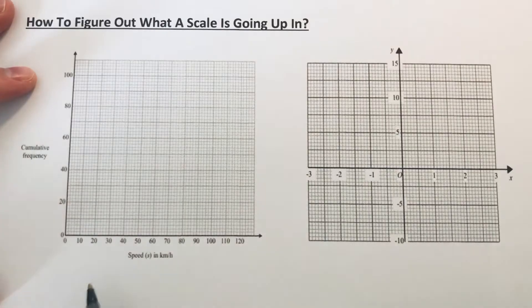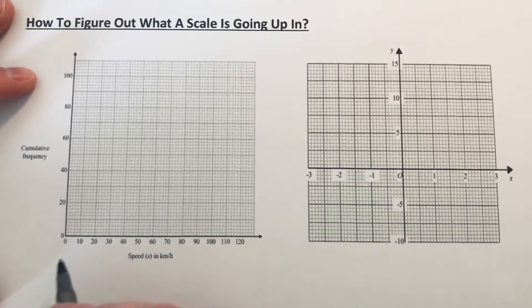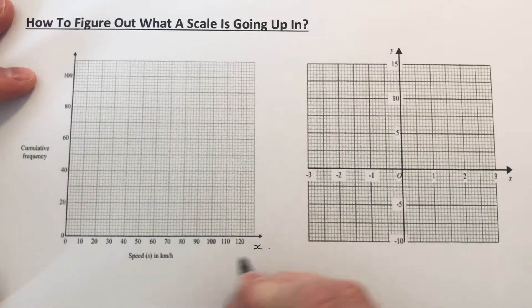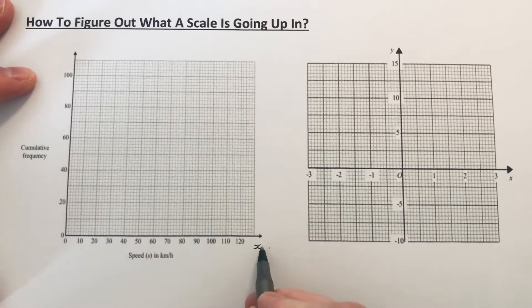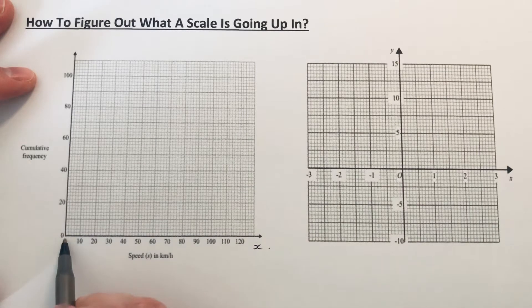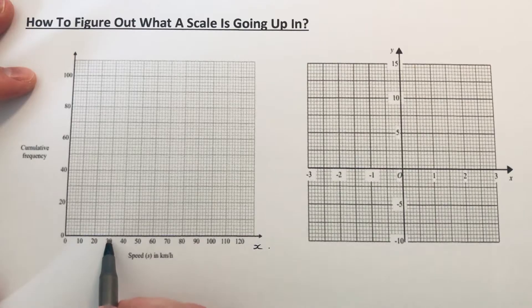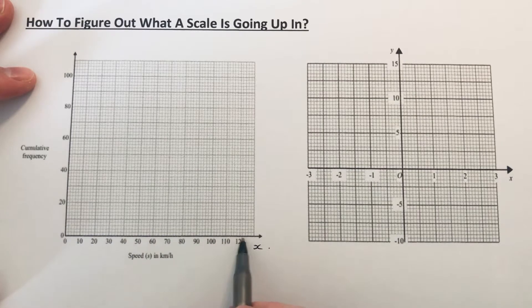So let's start off with our first graph. Let's work out what our scale is along the x-axis first. As you can see, every five squares going across it's going up in tens.